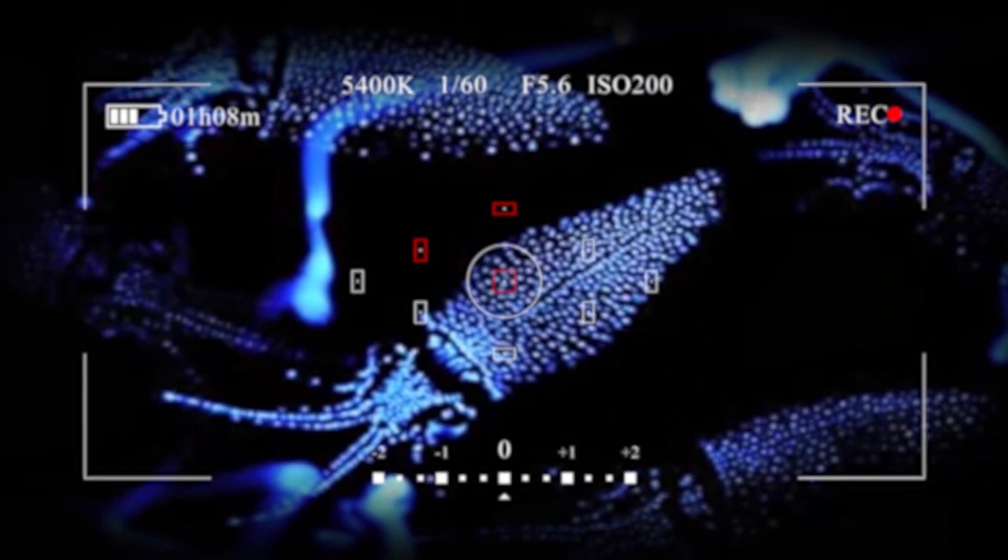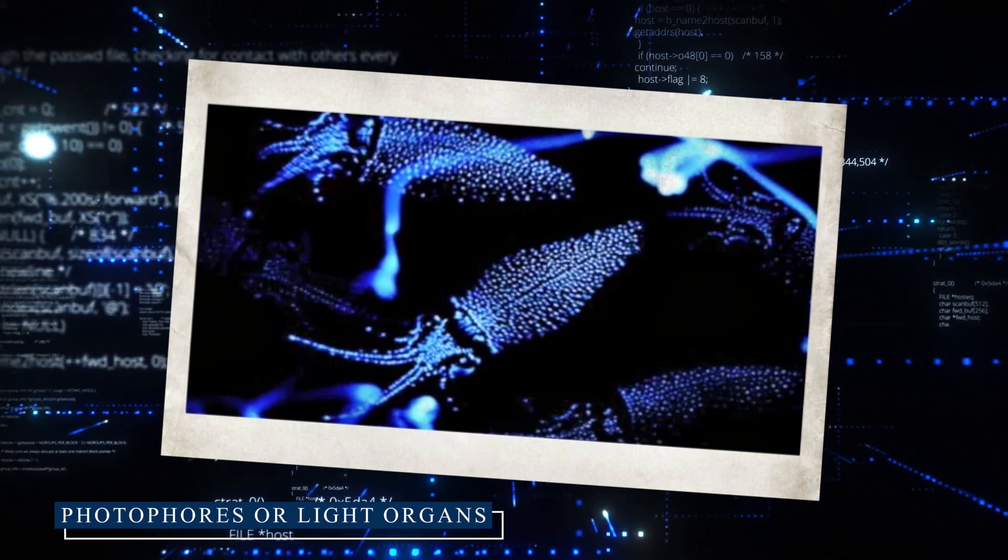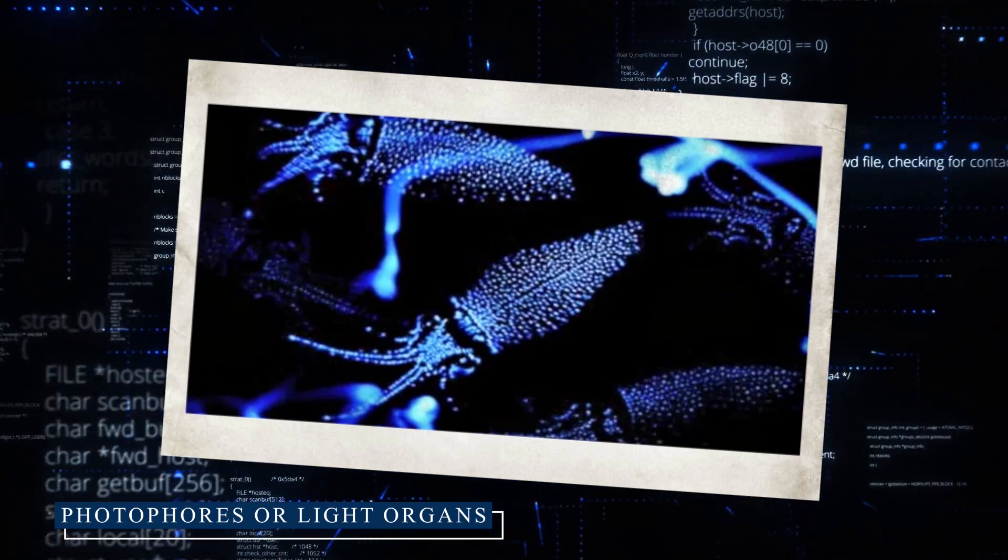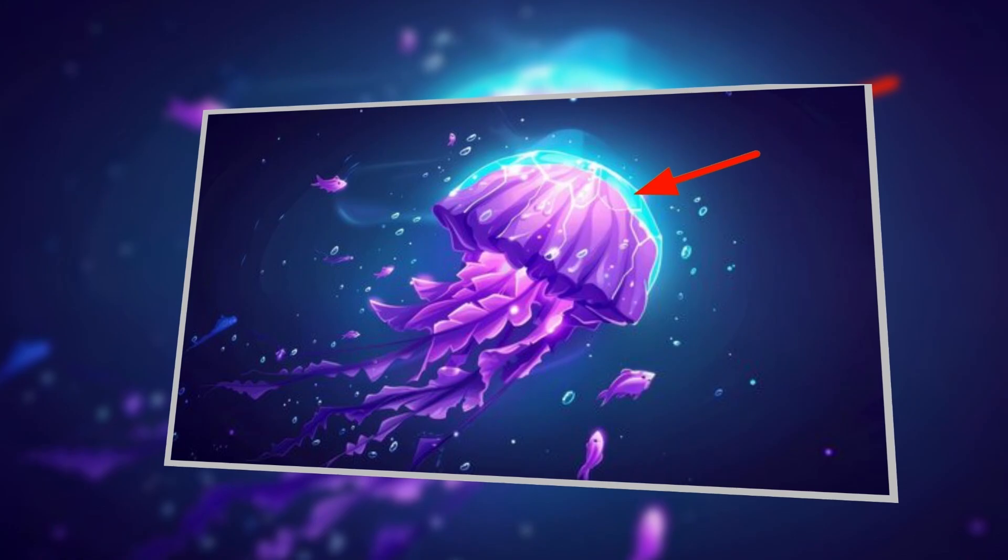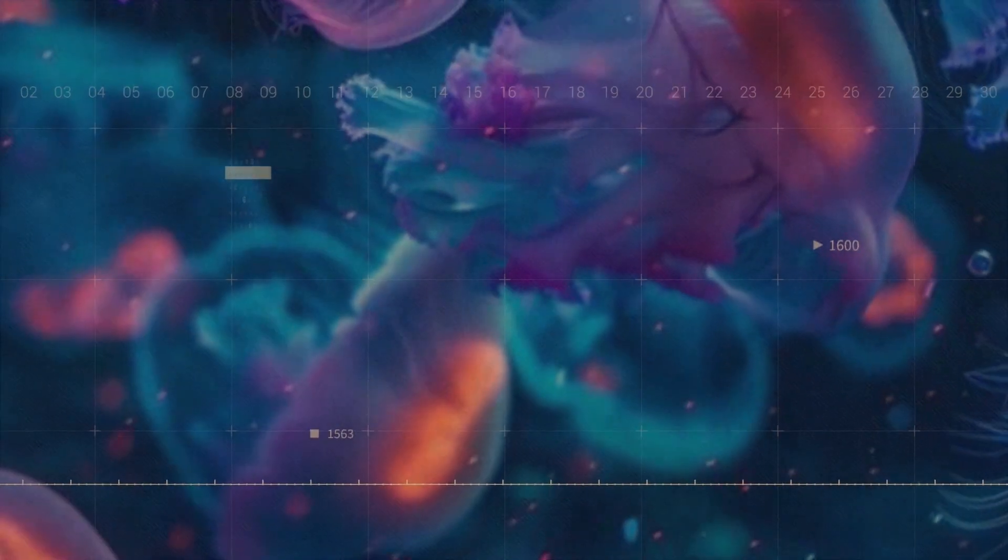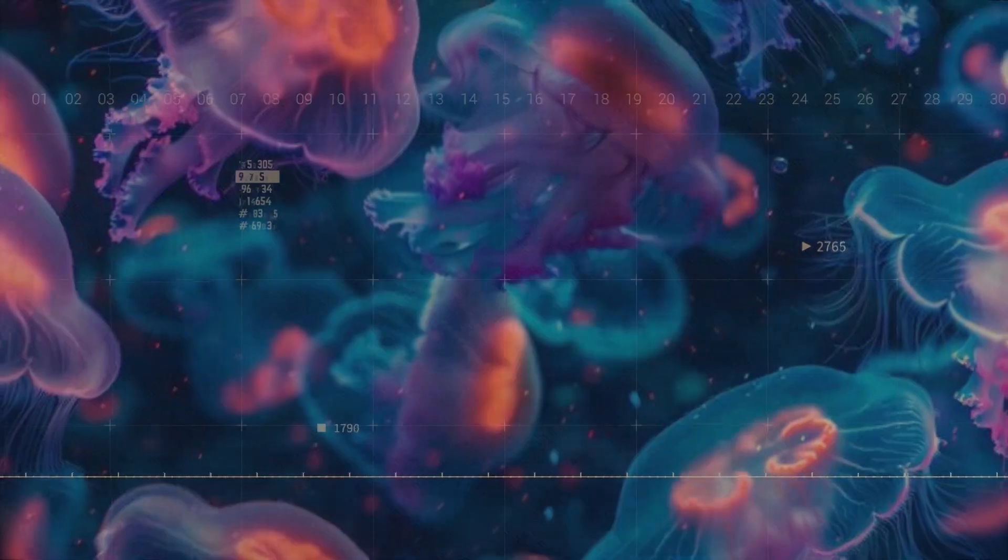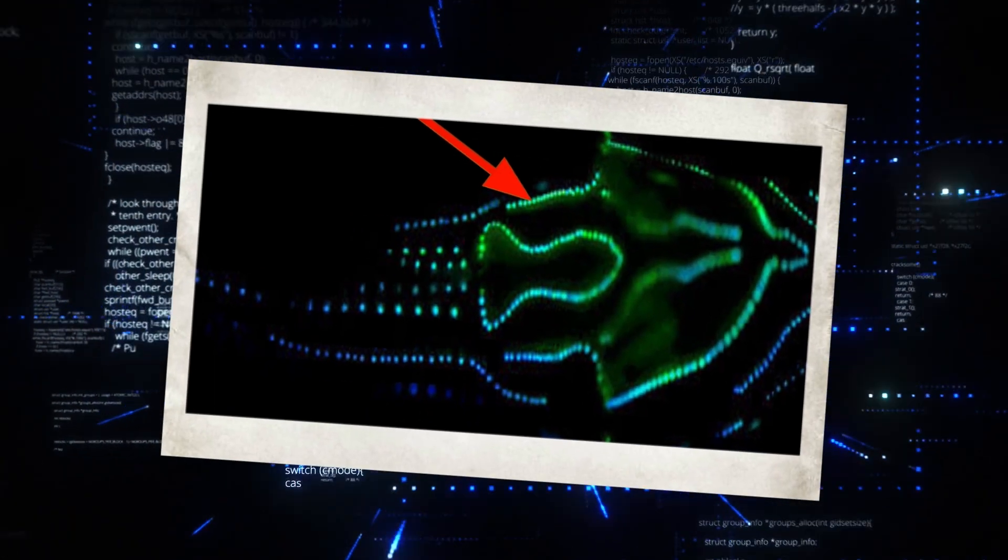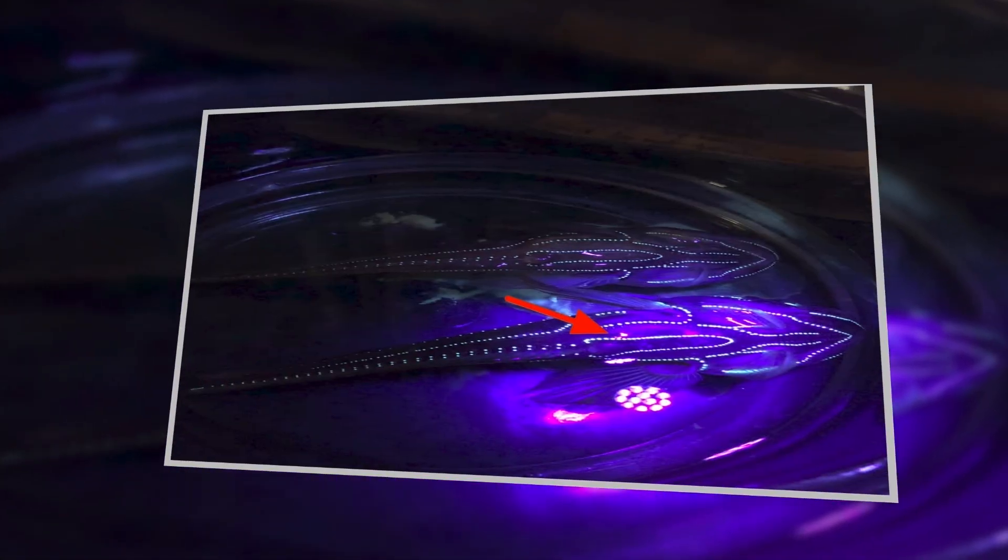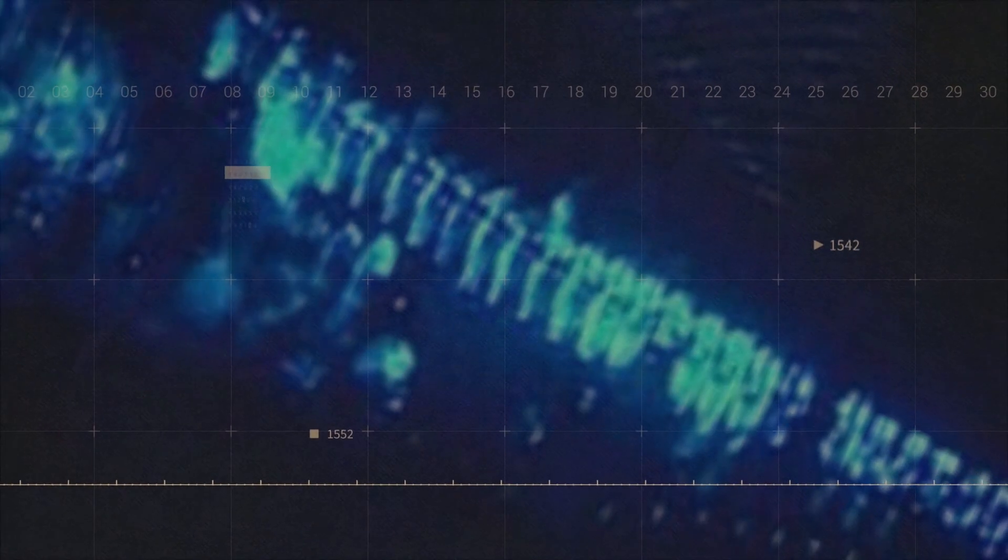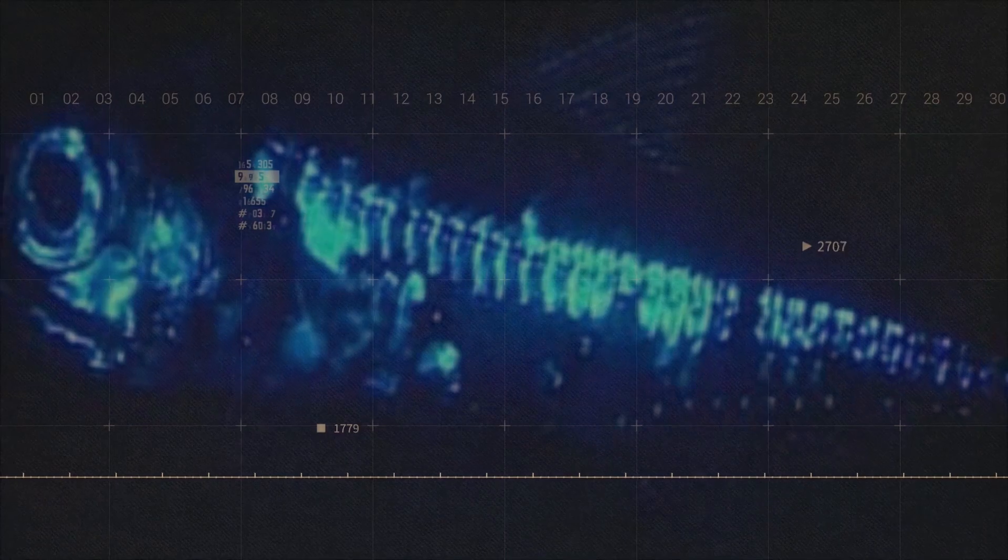The actual production of light occurs in specialized structures called photophores, or light organs. These can range from simple clusters of light-producing cells to complex organs complete with lenses, reflectors, and color filters. In many fish, photophores are arranged in specific patterns along the body. These patterns can be used for species recognition or to break up the fish's silhouette through counter-illumination.